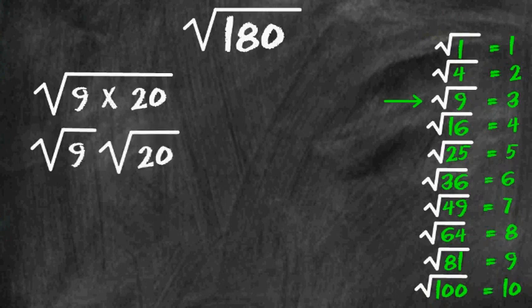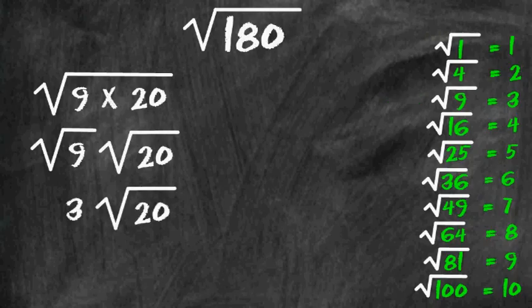So we are going to write each one of those factors underneath their own radicals. We know that the square root of 9 is 3, so we can write 3 directly underneath the square root of 9, and bring down the square root of 20.